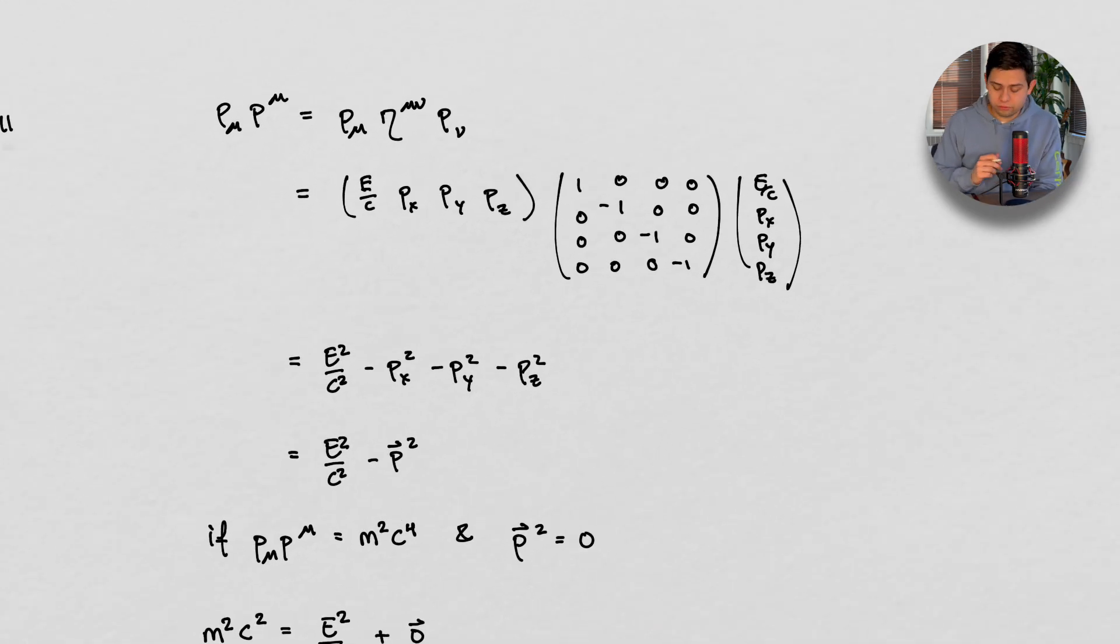So our 4 vector for momentum, it looks like this. So our energy momentum 4 vector, where the temporal component is the energy of an object, the spatial components are the momentum of the object. So when we apply our Minkowski metric, we get something that looks like this.